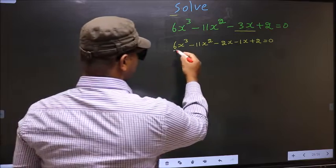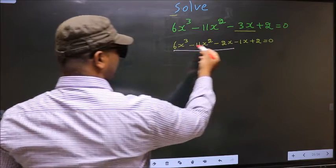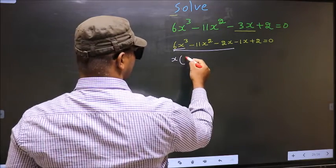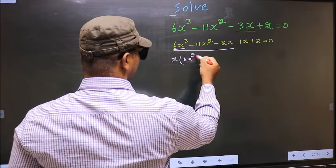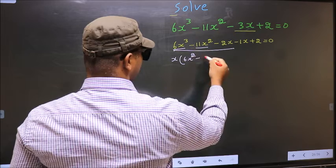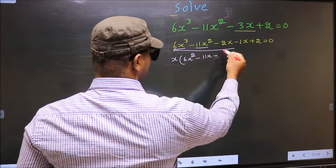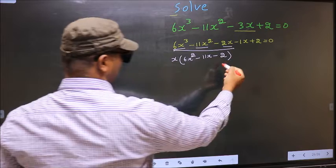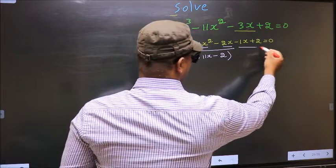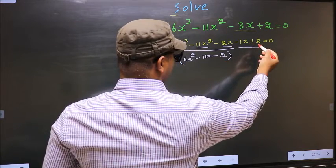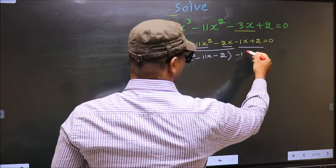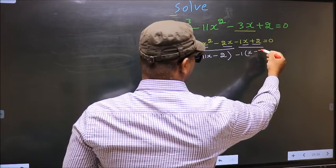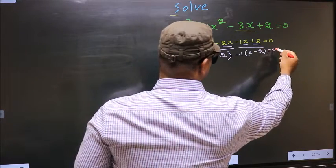Now from these first 3 terms, what can be taken out common is x. So here you get 6x squared minus 11x minus 2. Now from the last 2 terms, what can be taken out common is minus 1. Here you get x and here you get minus 2, equal to 0.